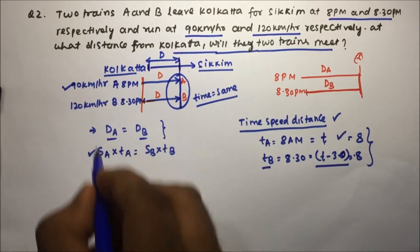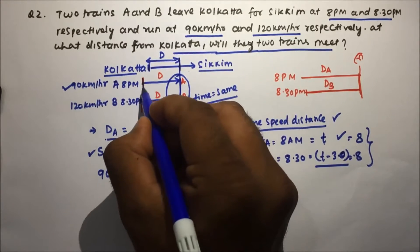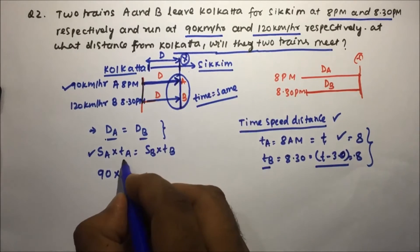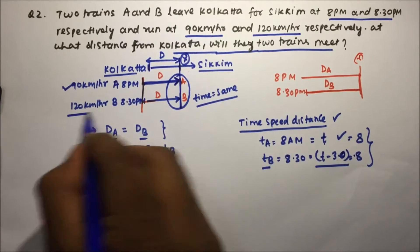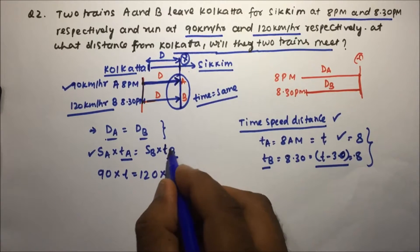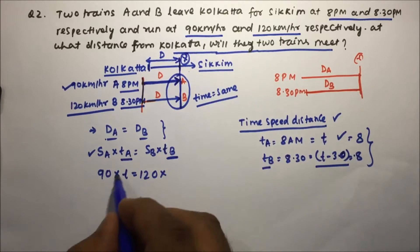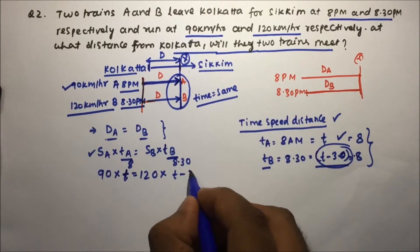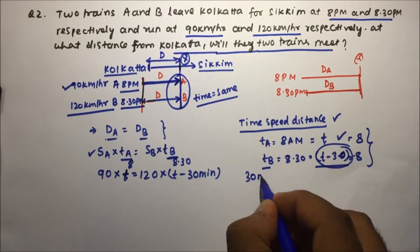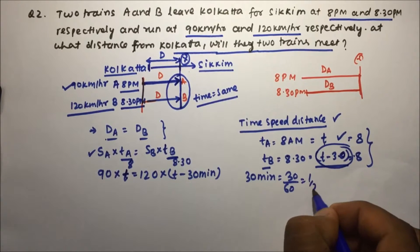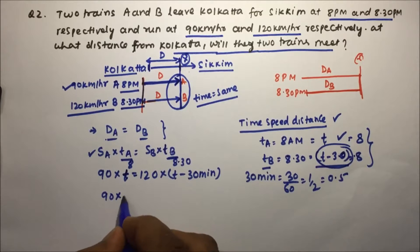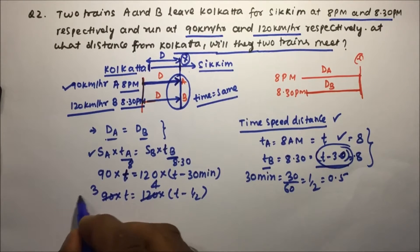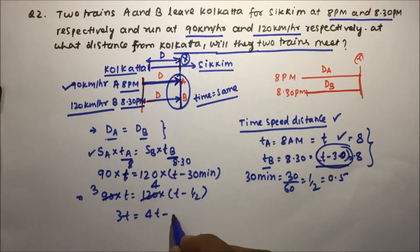Speed of A is 90 km/h and time taken by A is T. Speed of B is 120 km/h, and since B starts at 8:30 while we reference 8:00, time of B is T − 30 minutes, or T − 1/2 hours. Setting distances equal: 90 × T = 120 × (T − 1/2). Dividing by 30: 3T = 4(T − 1/2), giving 3T = 4T − 2.